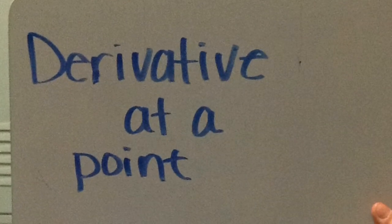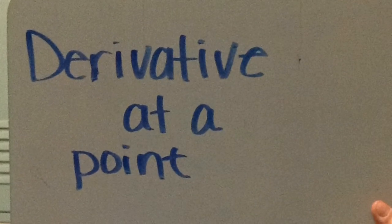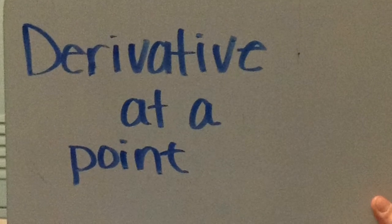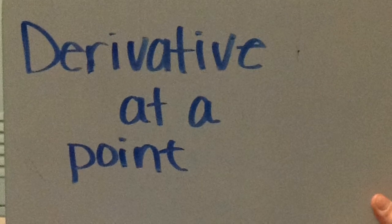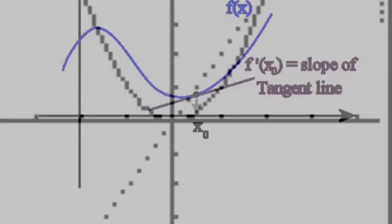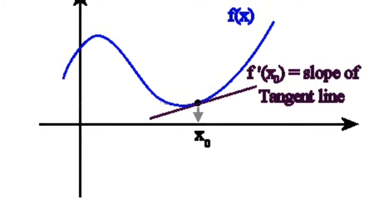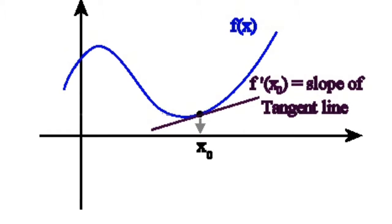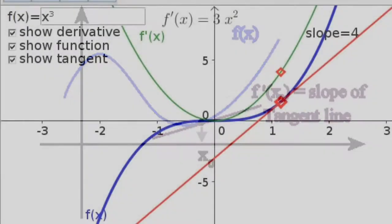You should know the power rule, the product rule, the quotient rule, and the chain rule. You should be able to find the slope of a curve at a point and the tangent and normal lines to a curve at a point. You should also be able to use local linear approximation and differentials to estimate the tangent line to a curve at a point. You should be able to find the instantaneous rate of change of a function using the derivative and as the limit of the average rate of change, and approximate the rate of change from a graph or a table of values.